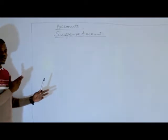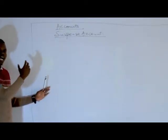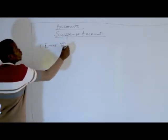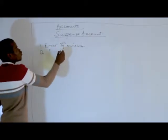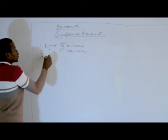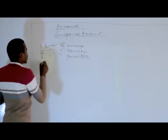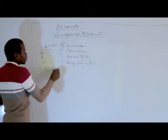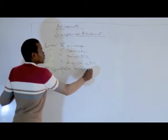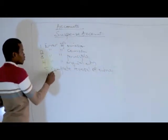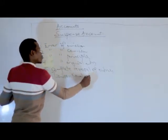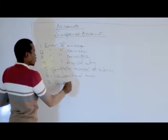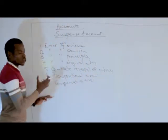The type of errors that we will be dealing with are the errors that in most cases do not affect the trial balance agreement. These types of errors include error of omission, error of commission, error of principle, error of original entry, complete reversal of entries, transpositional error, and compensating error. These are the errors we will be specifically looking at when we are talking about the suspense account.